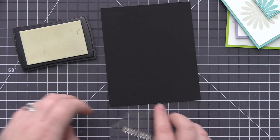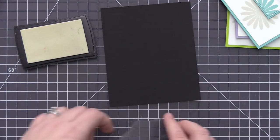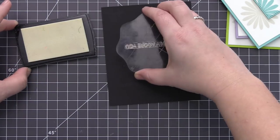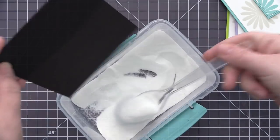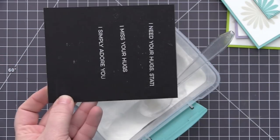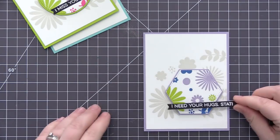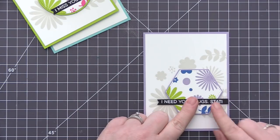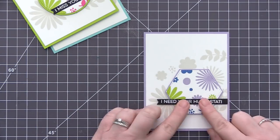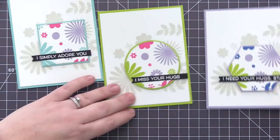Okay, so now that we have the cards finished, we just need to add our sentiments. So I have three different sentiments from the More Essential Sentiments stamp set. I'm stamping them onto black cardstock with Versamark ink, which is just a clear ink. And then I'm adding white embossing powder on top. I'm going to go ahead and heat set those and die cut them with a little sentiment fishtail banner. And then I'm going to add them directly onto each of the little panels that we've die cut.